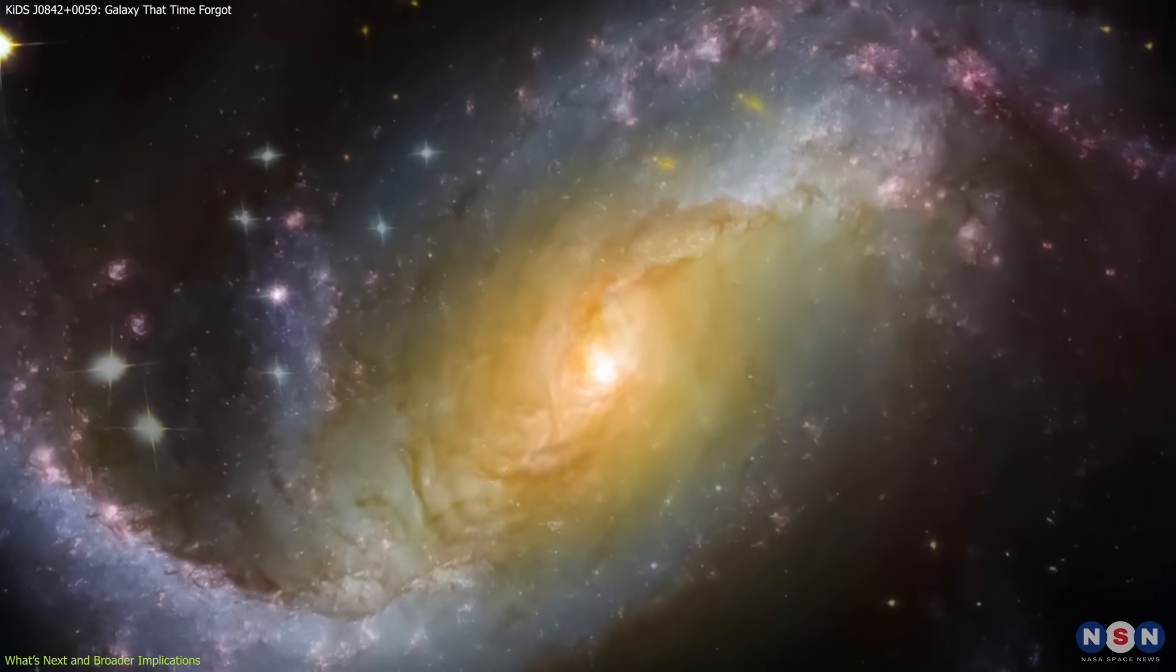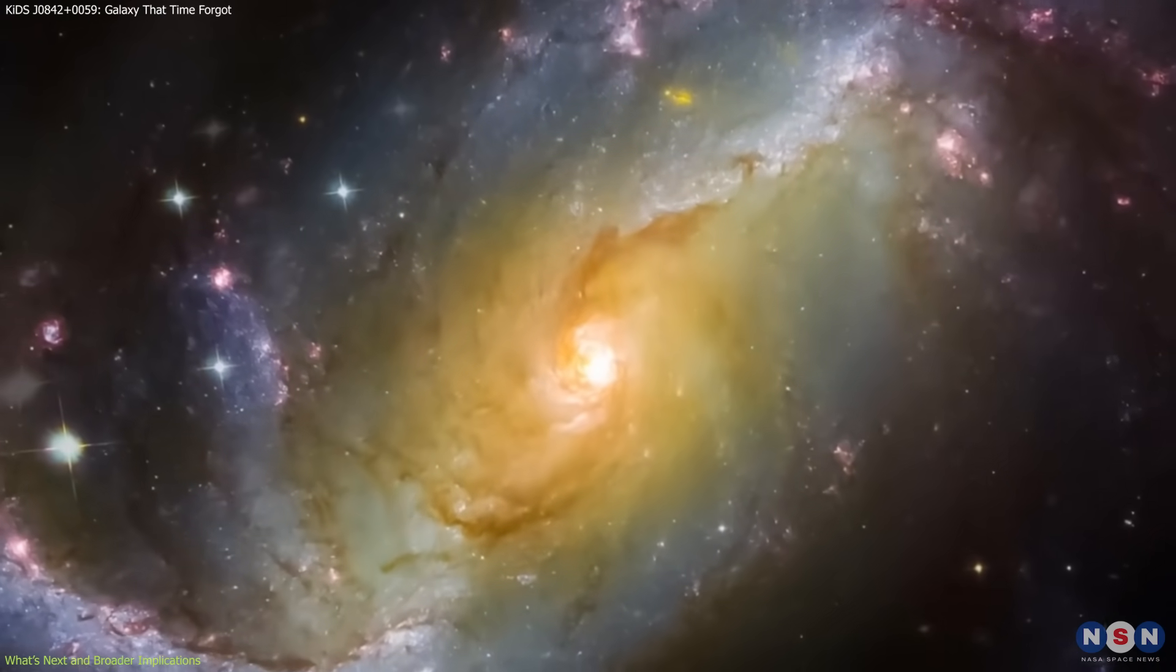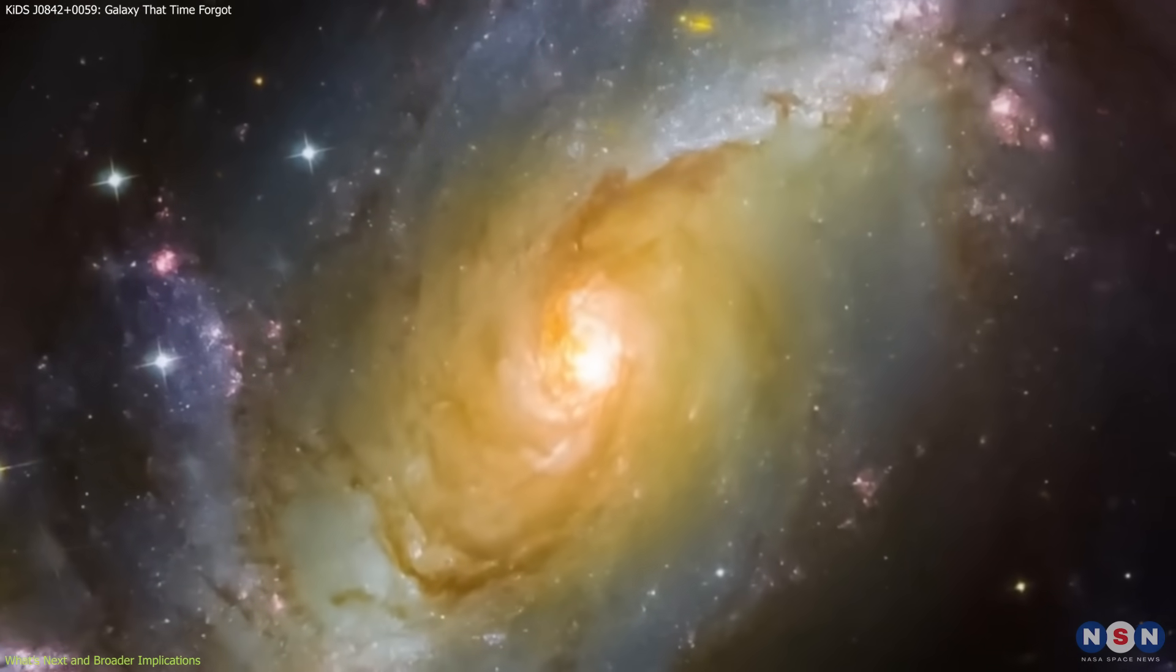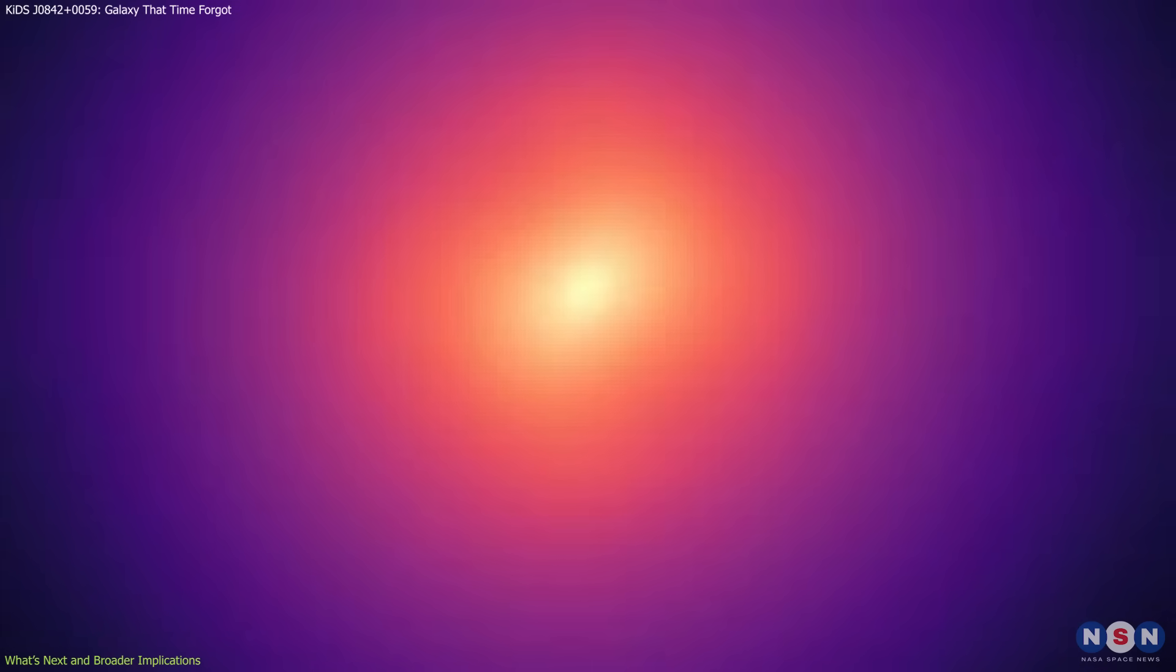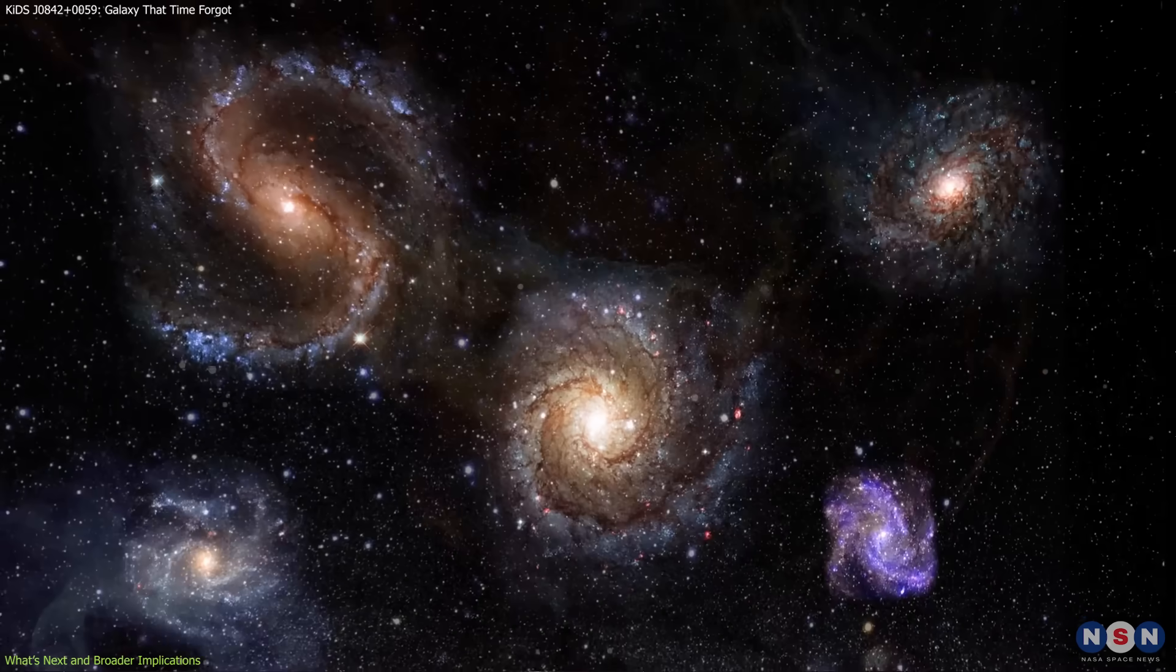For instance, fossil galaxies may help explain why the centers of massive modern galaxies are so dense. It's possible that many of them grew around cores that looked just like KIDS J0842+0059 billions of years ago.